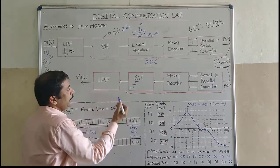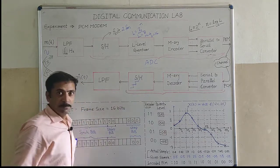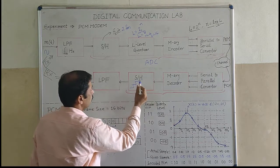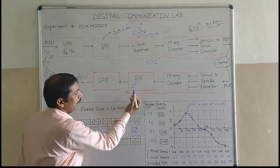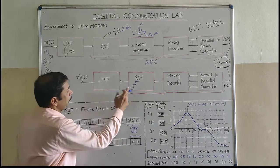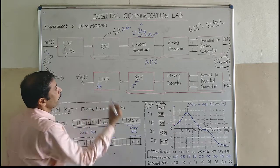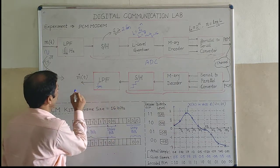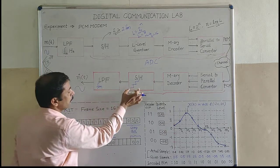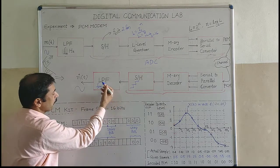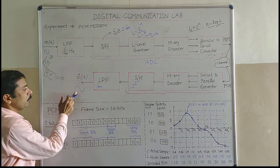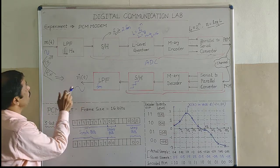I will get a staircase approximation signal exactly resembling the input signal. This signal has higher spectral content because of its staircase nature. When I apply it to a low pass filter with cutoff frequency FM, I get a smooth signal. This LPF removes the coarseness present in the signal — it eliminates higher spectral content and allows only signals up to FM frequency, giving a smooth waveform that is the recovered version of the input signal.